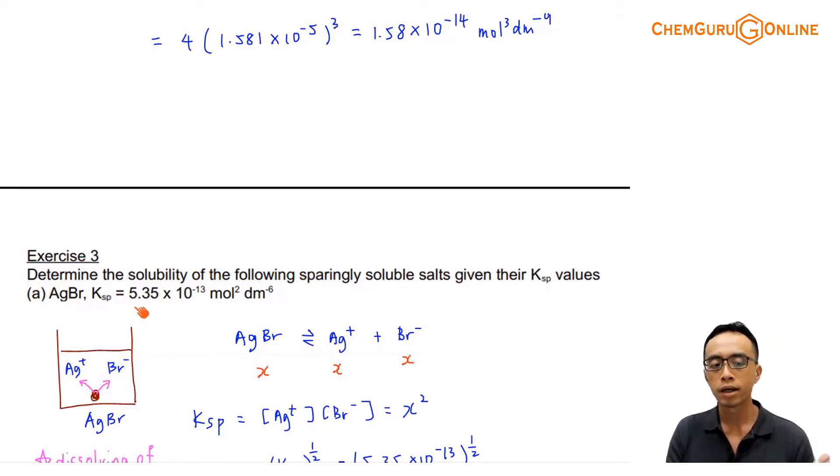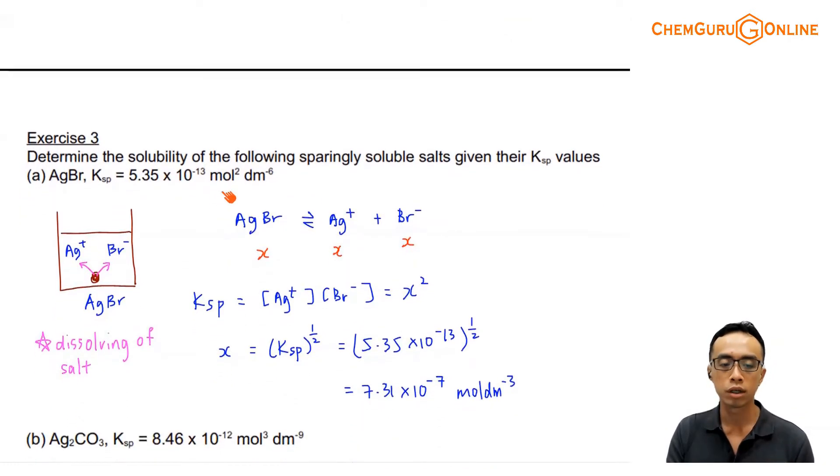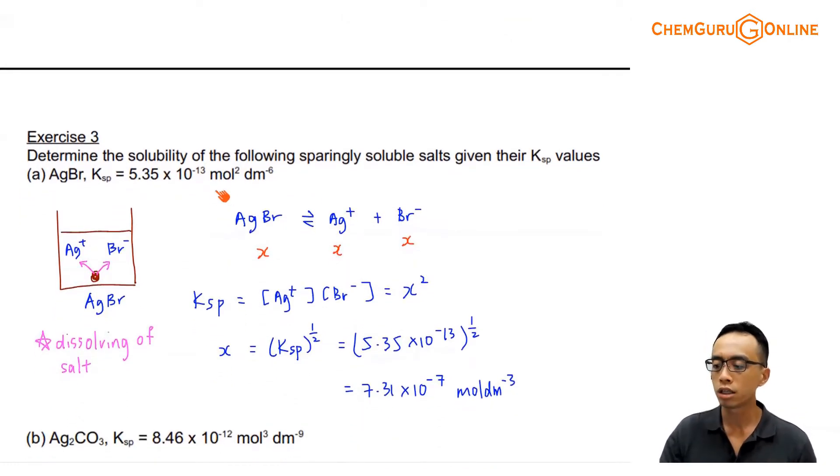Silver bromide, Ksp is this value. So again, if I want to consider solubility, solubility has to be for a saturated solution, correct? The solution has to be saturated.